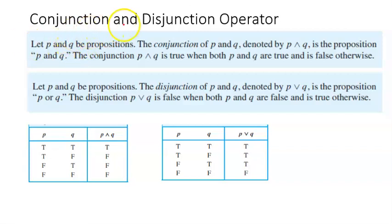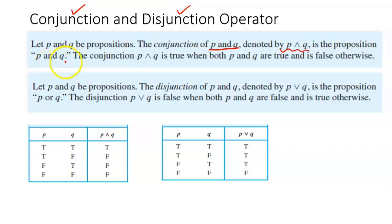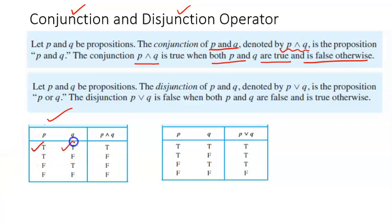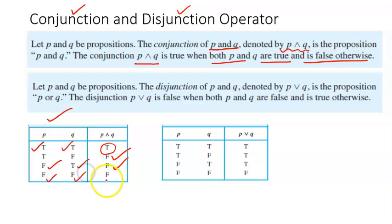Now let us talk about other operators used when we have more than one simple proposition — conjunction and disjunction. Let P and Q be two propositions. The conjunction of P and Q, denoted by P ∧ Q, is the proposition 'P and Q.' It is true when both P and Q are true, and false otherwise. From the truth table: if both P and Q are true, P ∧ Q is true. If P is true and Q is false, P ∧ Q is false. If P is false and Q is false, P ∧ Q is false.